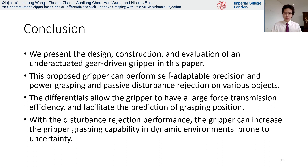In conclusion, here we present the design, construction, and evaluation of an underactuated gear-driven gripper. The proposed gripper can perform self-adaptable position and power grasp, and passive disturbance rejection on various objects. Compared to tendon or soft material designs in the literature, the proposed differential design allows the gripper to achieve large force transmission efficiency and facilitates the prediction of grasping positions. In addition, our gripper is highly modular compared to other mechanical-based designs, since the three differentials are the same, leading to a relatively simpler assembly structure. Finally, with the disturbance rejection performance, the gripper can increase its grasping capability in dynamic environments prone to uncertainty.